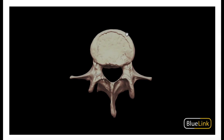Now that we've got the vertebral body and gotten our bearings, pretty much everything posterior to the vertebral body is the vertebral arch, and we consider several things in it: the pedicle, transverse processes, articular processes, the lamina, and the spinous process. Pretty much everything behind the vertebral body is considered the vertebral arch.